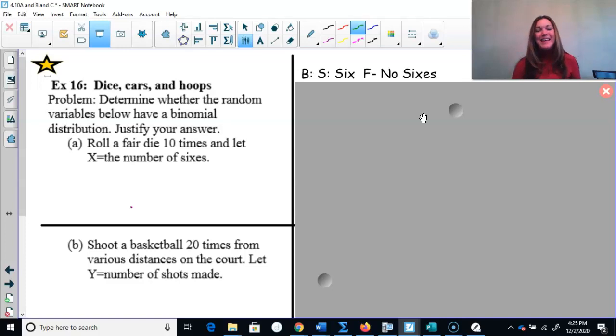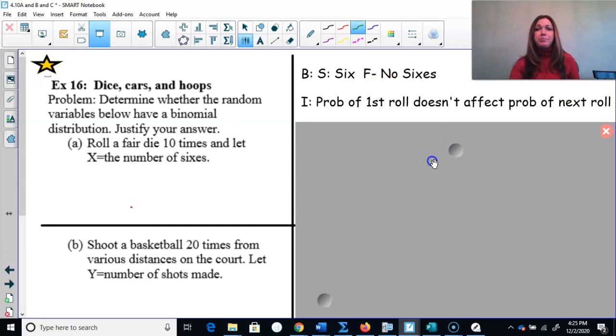But anyways guys, we roll a fair die 10 times. We're going to record the number of sixes that we get each time when we roll it out of the 10. So we're either going to get a six or we're not going to get a six. Success, failure. Binary is okay there. I - independence. Is it independent each time I roll the dice? Yes, it is. If I get a six one time, that doesn't guarantee I'll get a six the other time and it doesn't change the probability of getting a six the next time. They're independent of each other. Probability of the first roll doesn't affect the probability of the next roll.